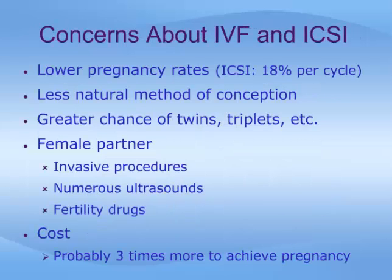While these techniques are suitable and successful for many couples, there are some disadvantages with them. Compared to a successful vasectomy reversal, pregnancy rates are lower — with ICSI, for example, achieving success in about 18% per cycle. It is also a less natural method of conception than a successful reversal, and there is a greater chance of multiple births, such as twins or triplets. For the female partner, IVF and ICSI involve invasive procedures, numerous ultrasounds, and the use of fertility drugs. Finally, the cost needs to be taken into consideration — it probably costs about three times more to achieve pregnancy with these methods compared to a successful reversal.